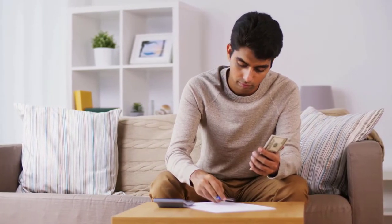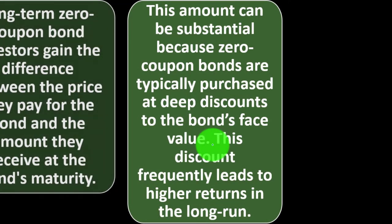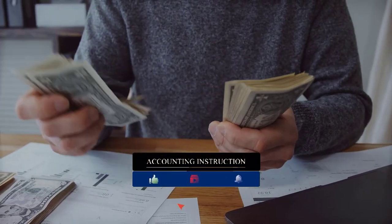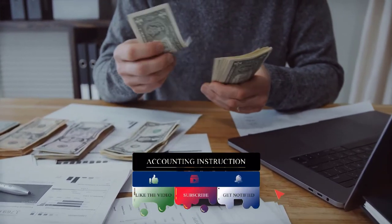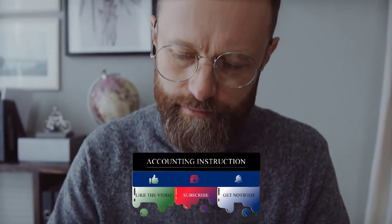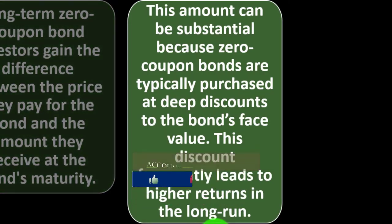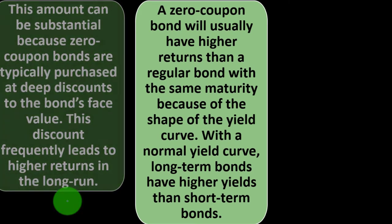That's what's happening on the bond side. We're loaning money and are promised the face amount back, but we purchase it at something below the face amount. The difference is in essence interest that has accumulated over the time. This discount frequently leads to higher returns in the long run. A zero coupon bond will usually have higher returns than a regular bond with the same maturity because of the shape of the yield curve.